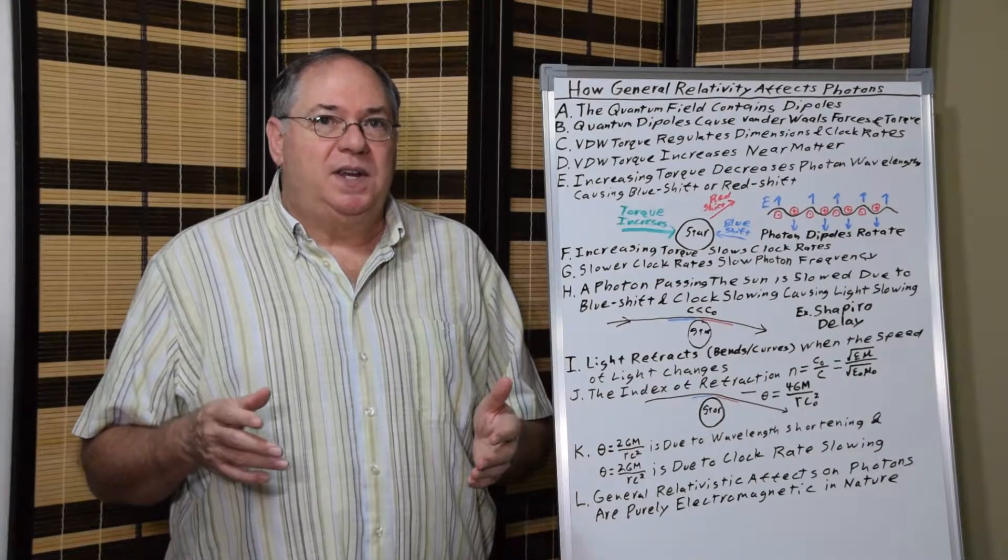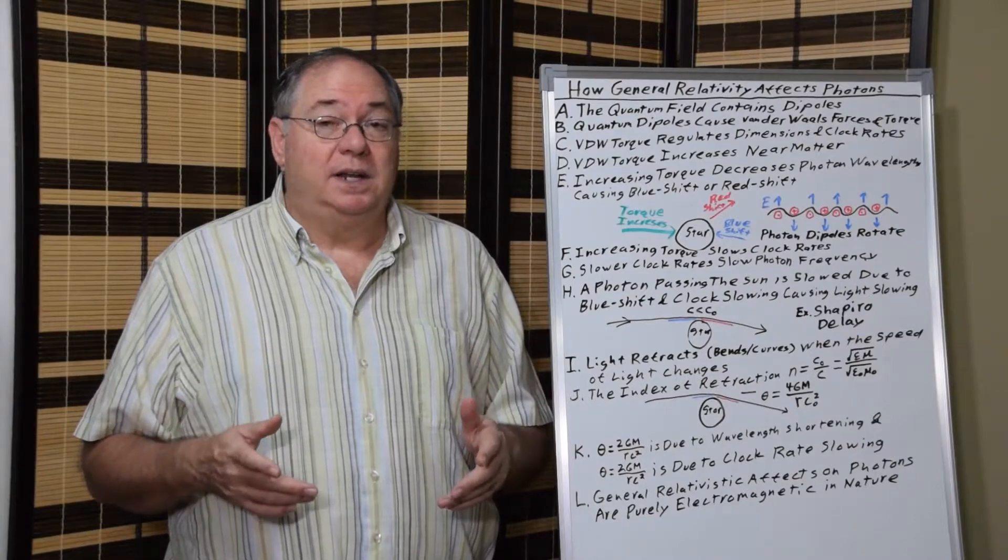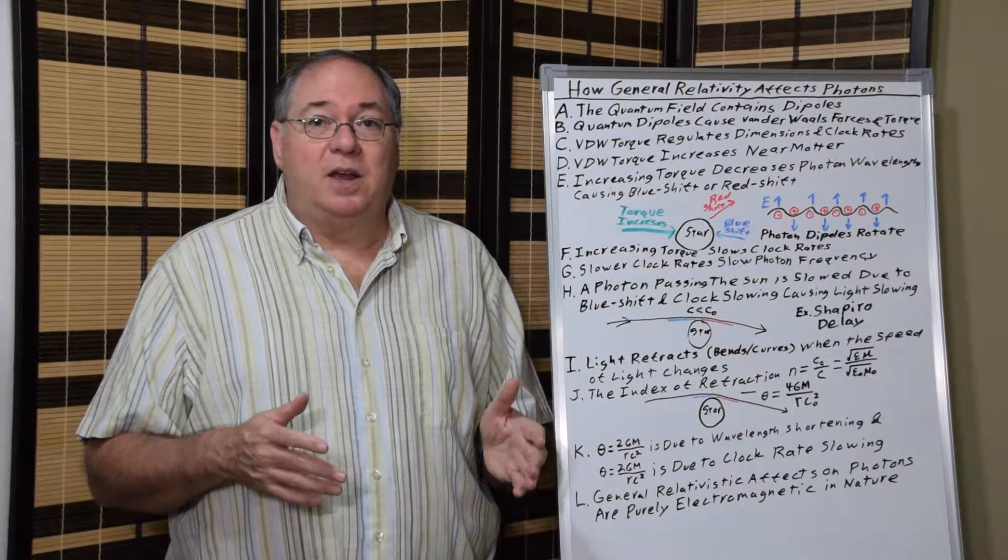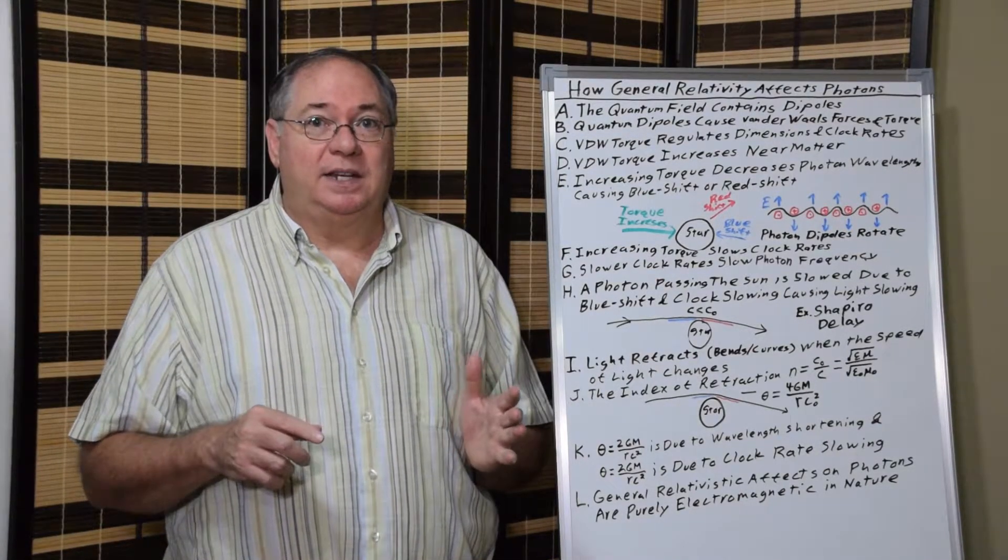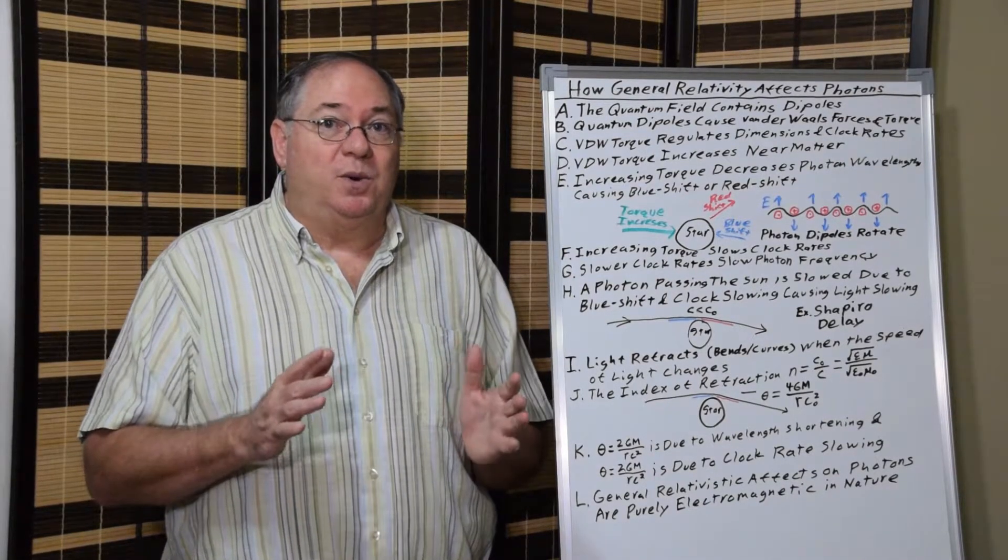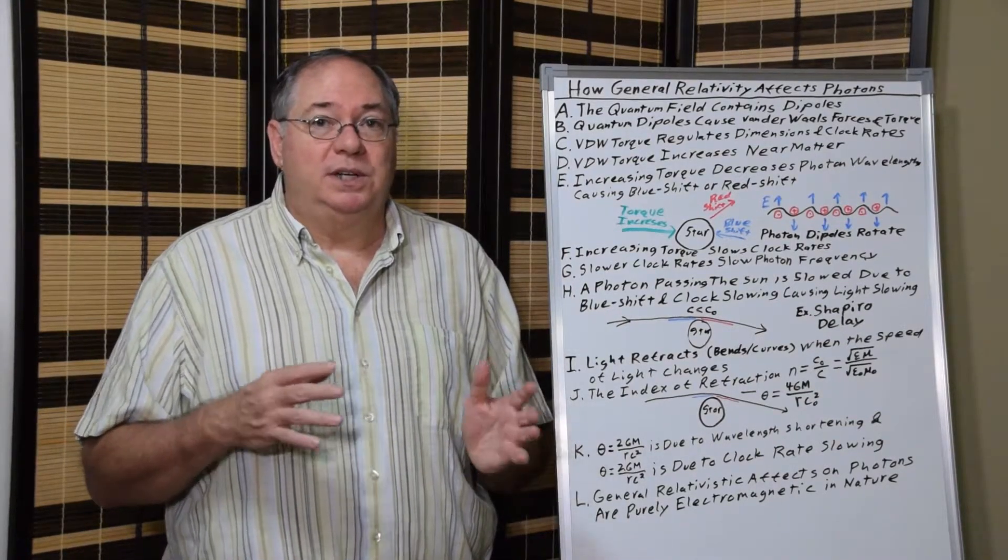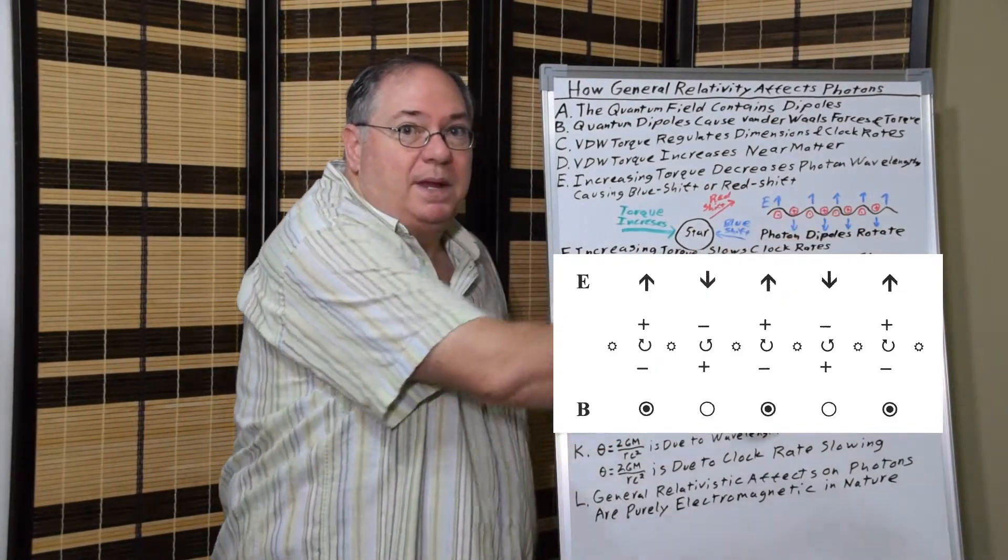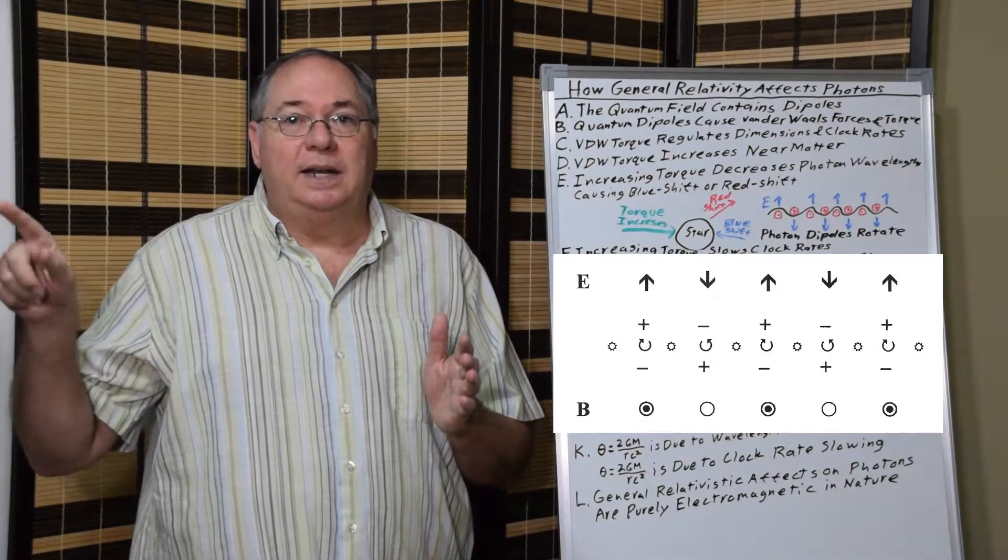Next we can see that increasing torque on photons causes blueshift. It causes wavelengths to get shorter because the photon rotation gets slower. And then as the torque decreases, you get redshift. And this is where blueshift and redshift come from.